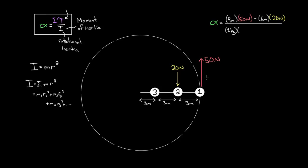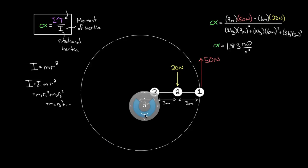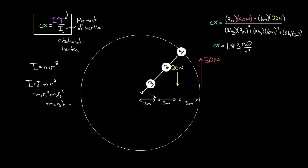Plugging all of this into the formula and calculating, we get that the angular acceleration alpha is 1.83 radians per second squared. So that's the rate at which this object would start accelerating. If it started from rest, it would start to speed up in the counterclockwise direction and keep speeding up as long as these forces maintained the torques they were exerting.